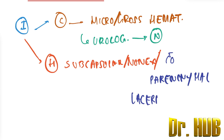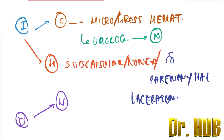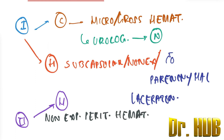Moving on to grade two: the hematoma here is a non-expanding perirenal hematoma, and it is confined to the renal retroperitoneum.